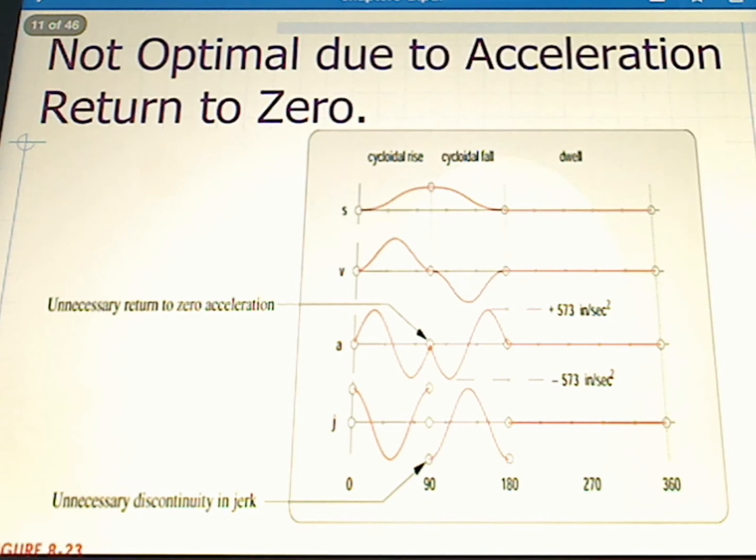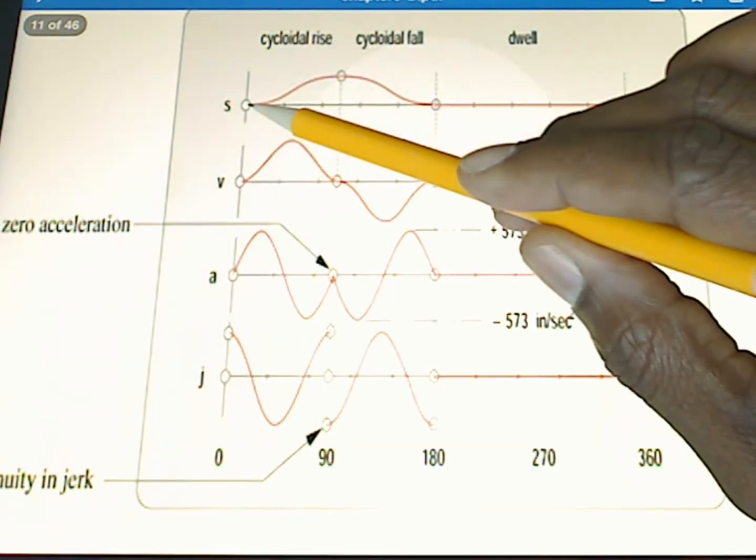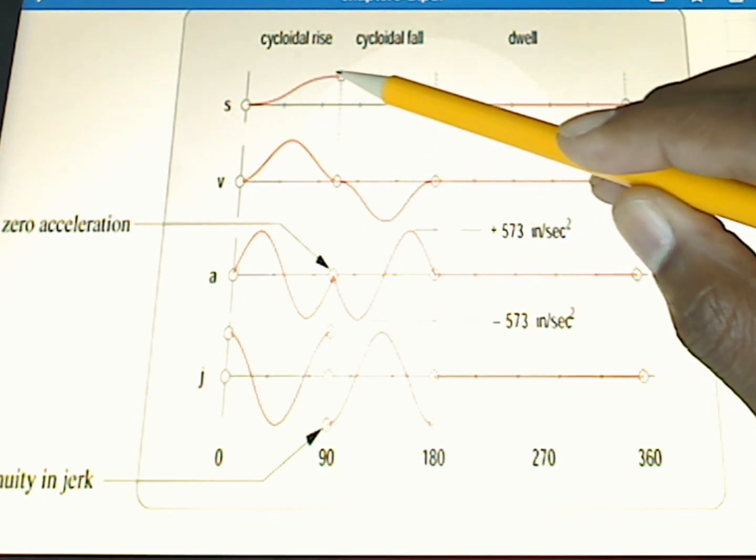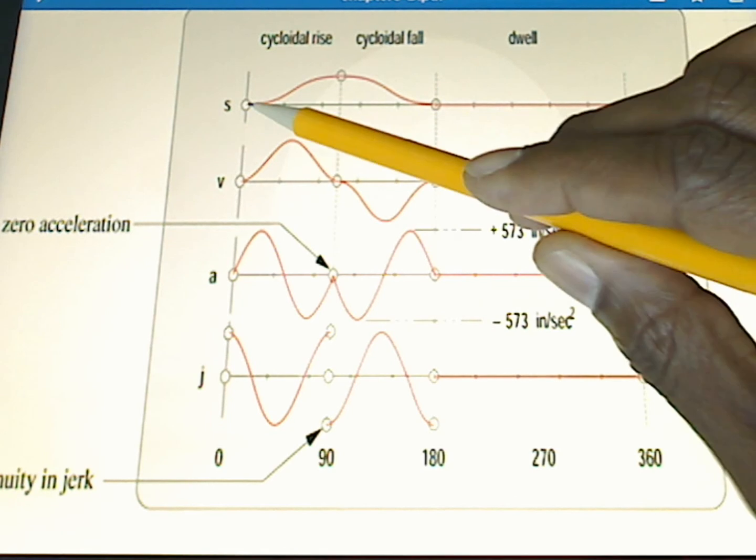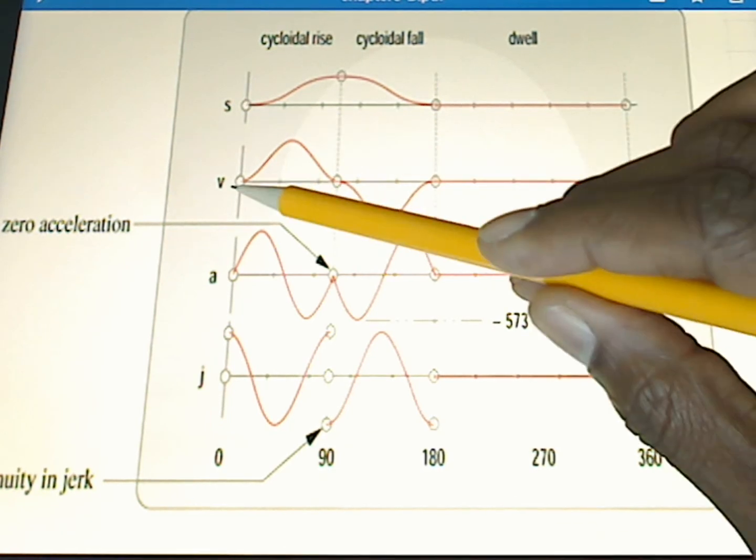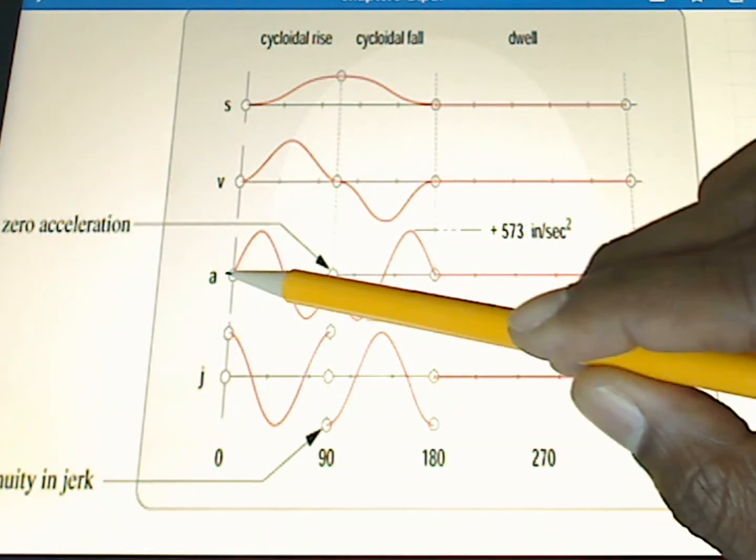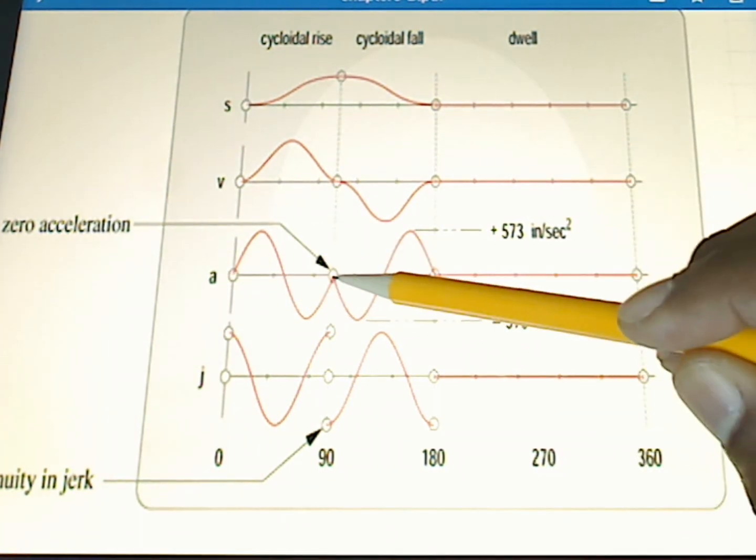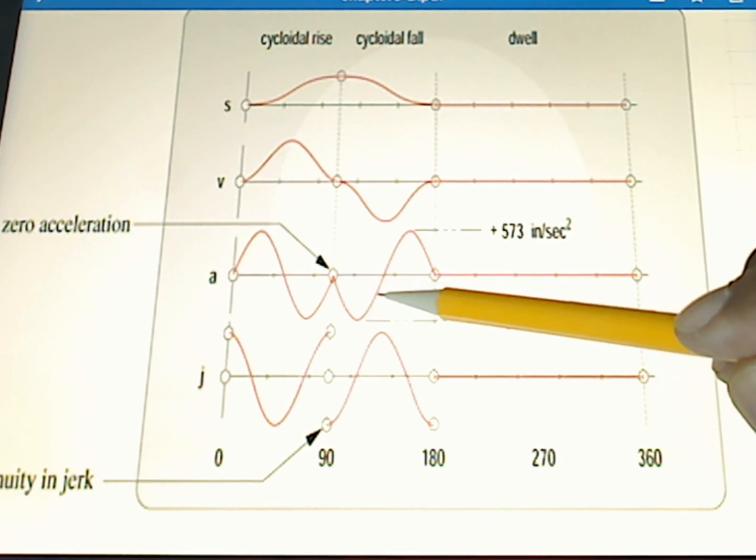Here we see our result. Let me zoom in a little bit. We see our position—it does indeed start at zero, rise, and do an immediate fall before it dwells and begins again. We see our velocity curve. We see our acceleration curve, but notice this: here we come back to zero and then we go negative again before coming back and dwelling.